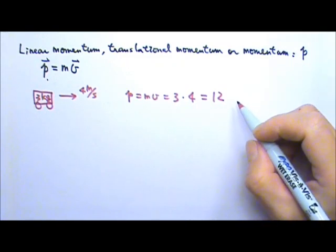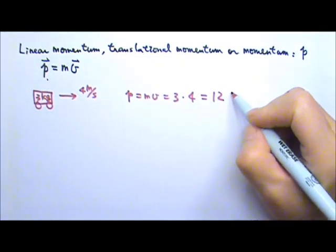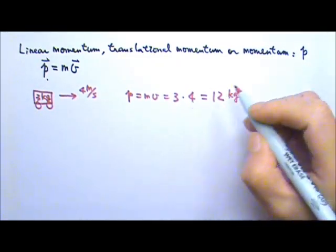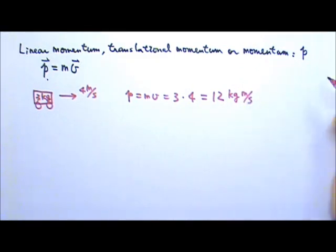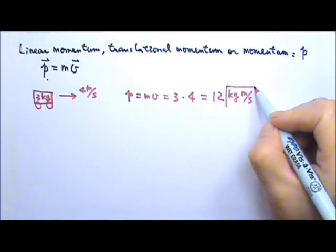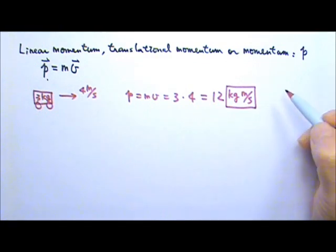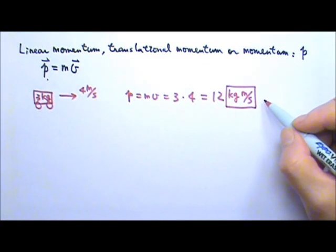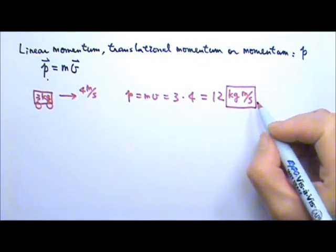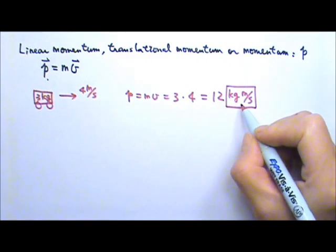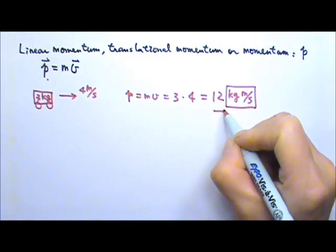And what would the unit be? m times v. Since it is kg times m per second, the unit would just be kg times m per second. And it doesn't have a special name. And the momentum has a direction, so it's 12 kg meters per second going to the right.